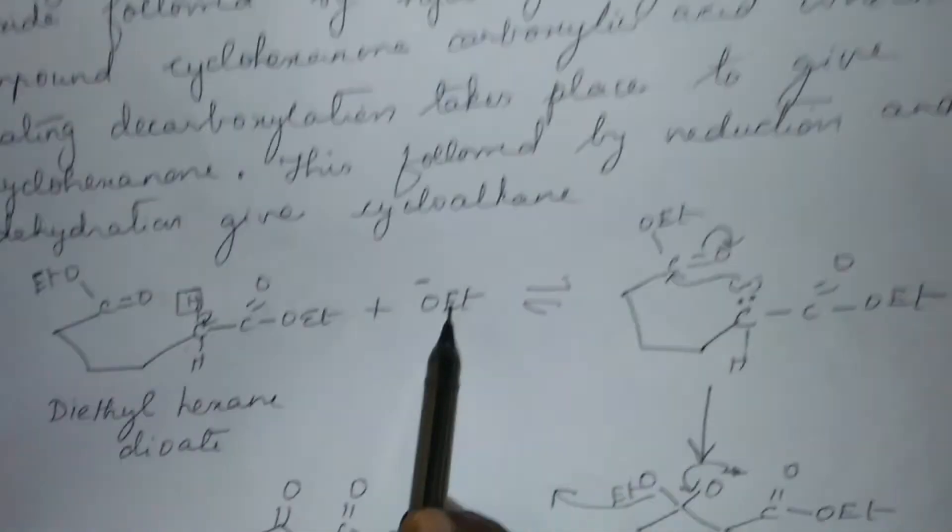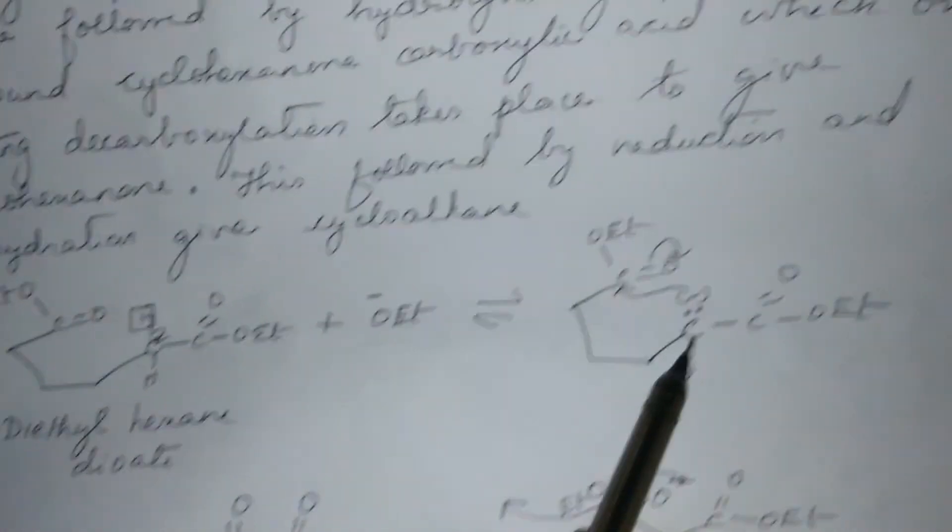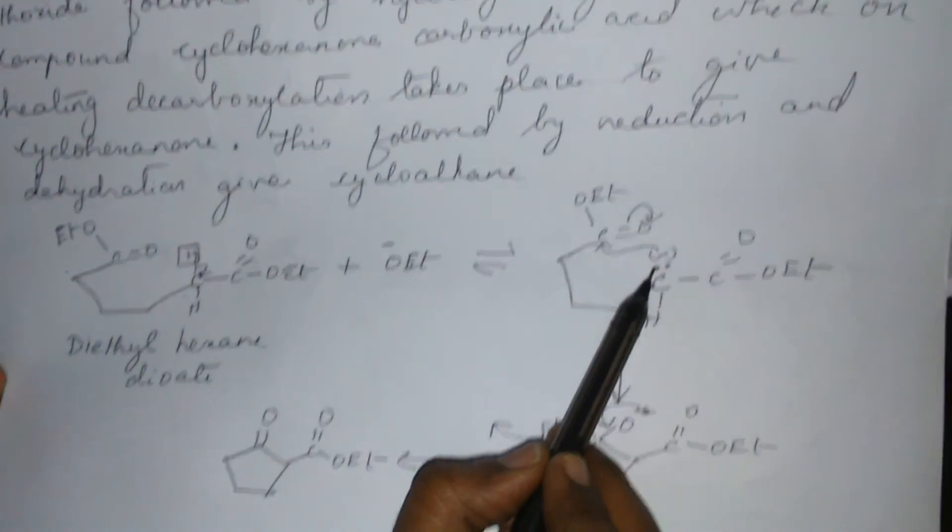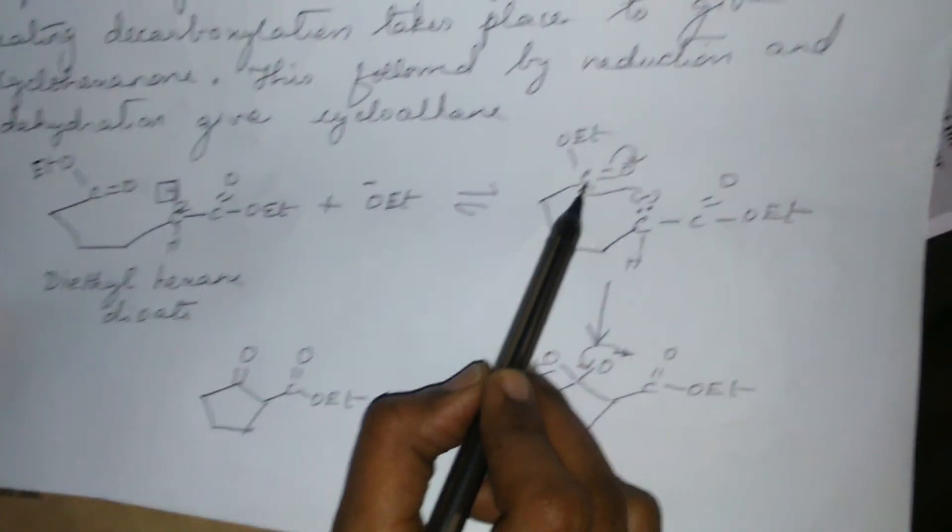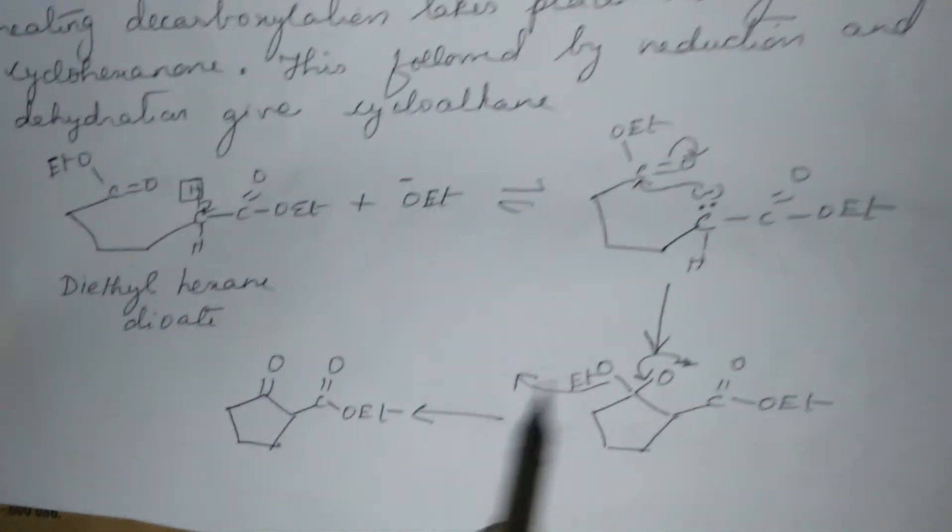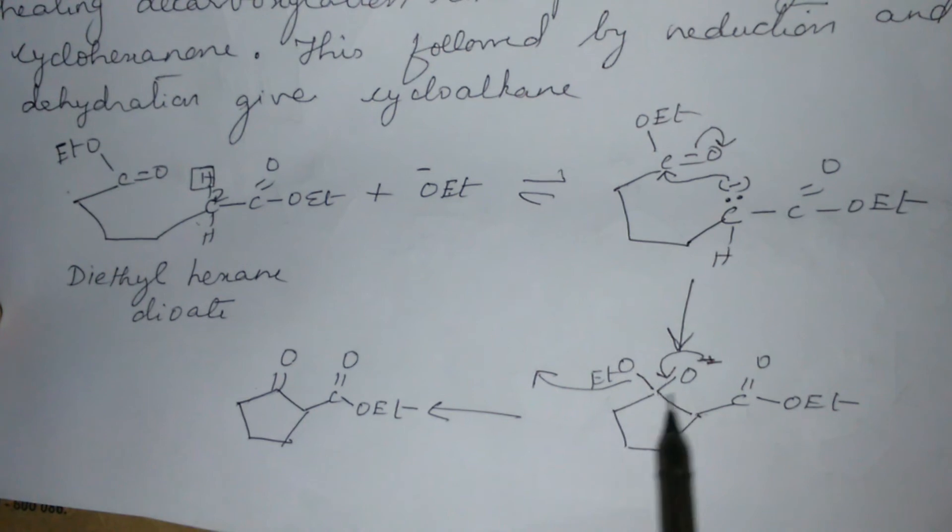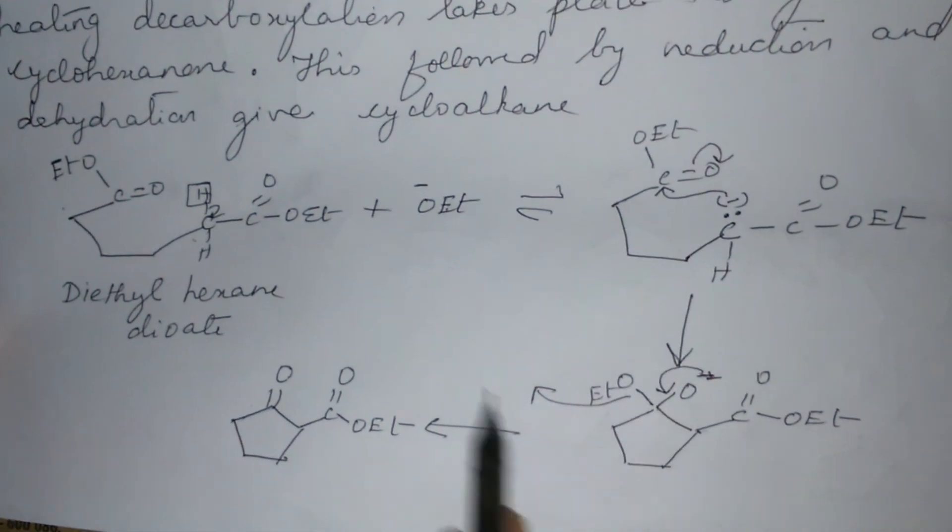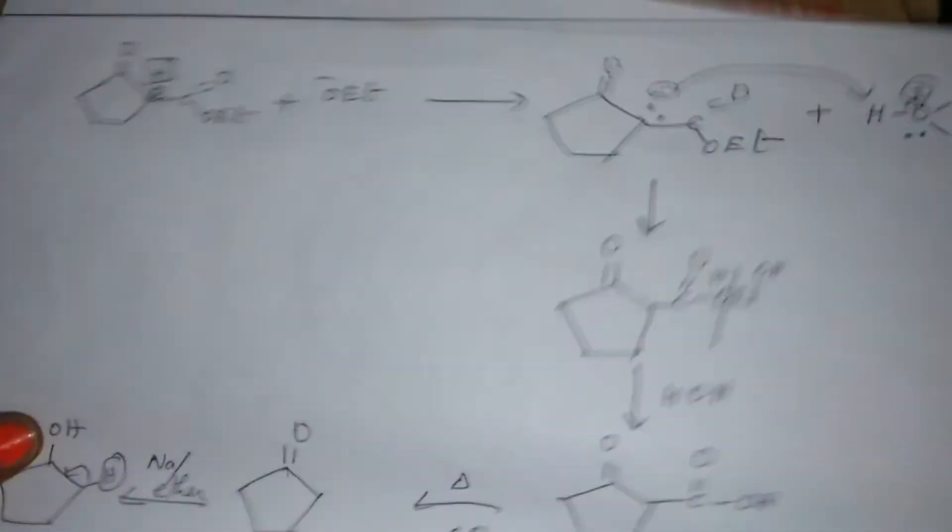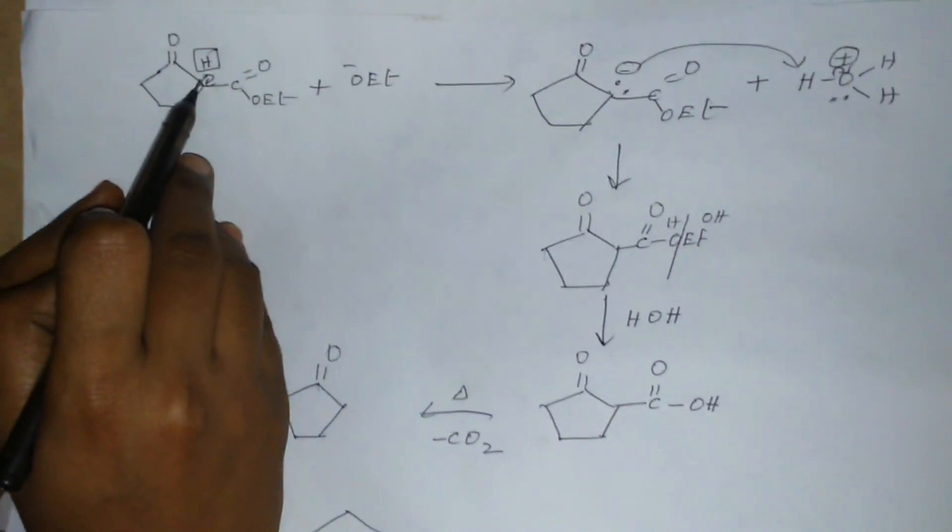I will repeat once again. Diethyl hexanedioate is treated with a base. The base is abstracting this proton, shifting this bond pair on the carbon. This carbon therefore a carbanion is generated. This attacks this carbon which is electrophilic, and now ring is generated. Now this O-Et is liberated, shifting this electron pair becomes a double bond here, and this O-Et leaves.